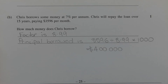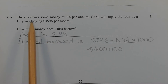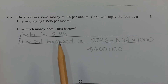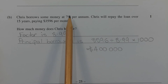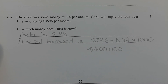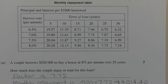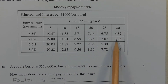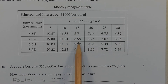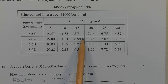First, we need to work out the correct factor to use from the table given the information in Part B. The interest rate per annum is 7% and it's over a period of 15 years. Going back to the table, that means referencing this row and this column here. The intersection of that row and column gives us the value 8.99.